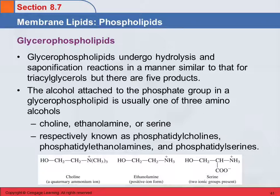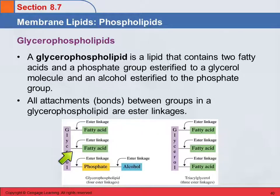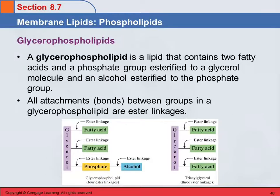These can also undergo hydrolysis and saponification just like the triacylglycerols do, but we're going to end up with five products instead of four. With the triacylglycerol there were three ester linkages, and when we broke those we got three fatty acids and the glycerol — four products. With the glycerophospholipid, we can also break the two ester linkages to get two fatty acids, but the other ester linkages can also hydrolyze or saponify, and we'll get an alcohol, phosphate, and glycerol — five different products.